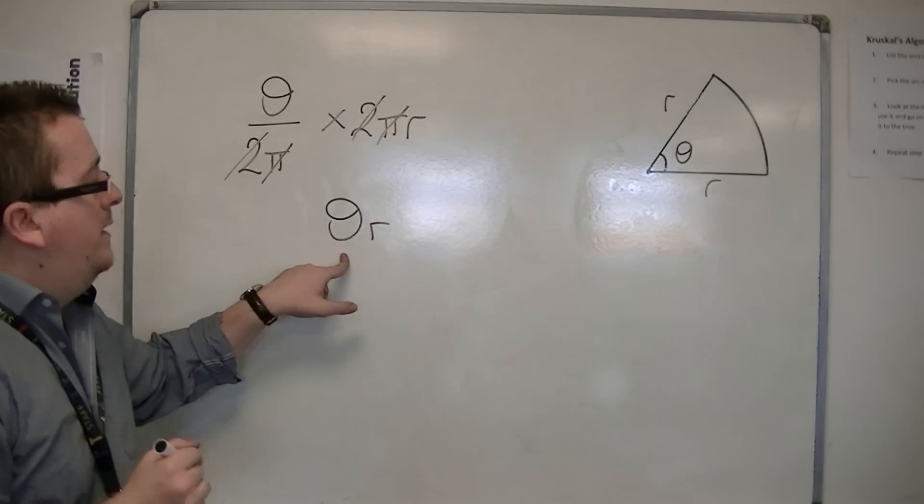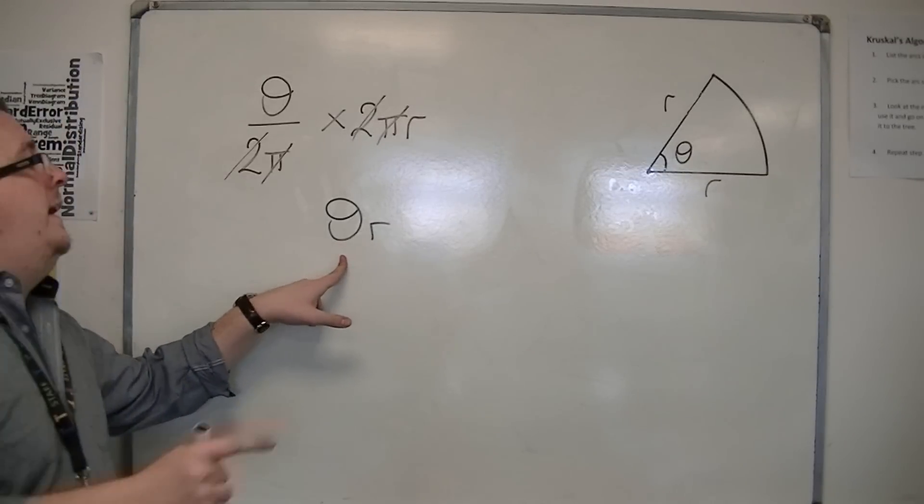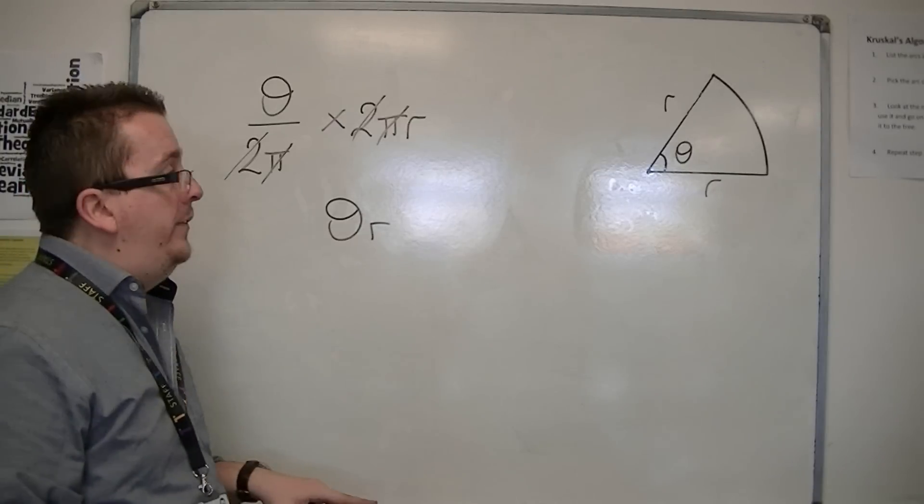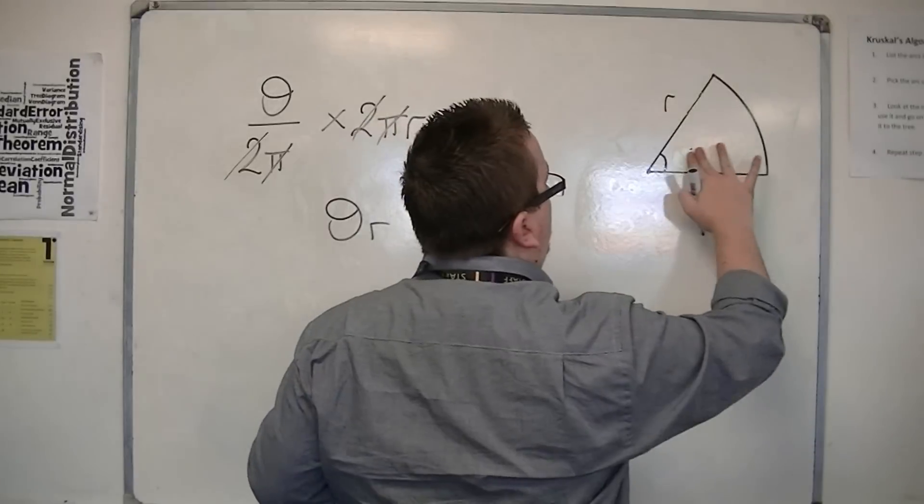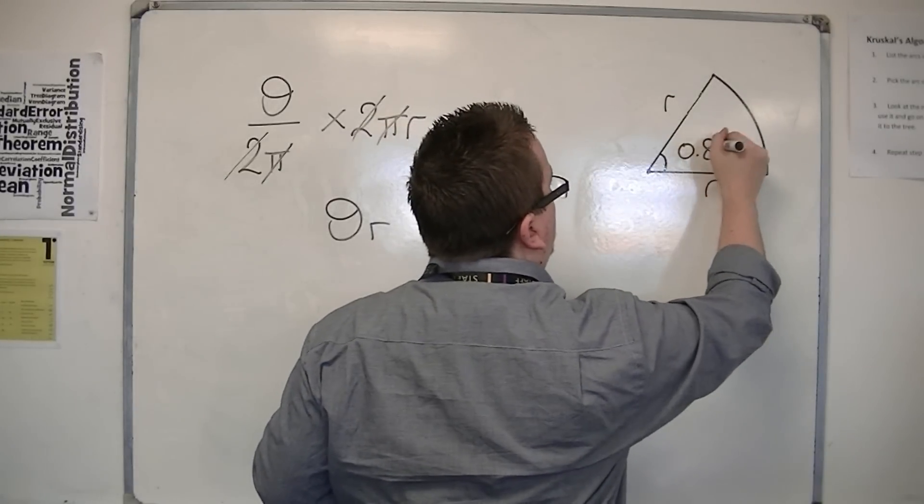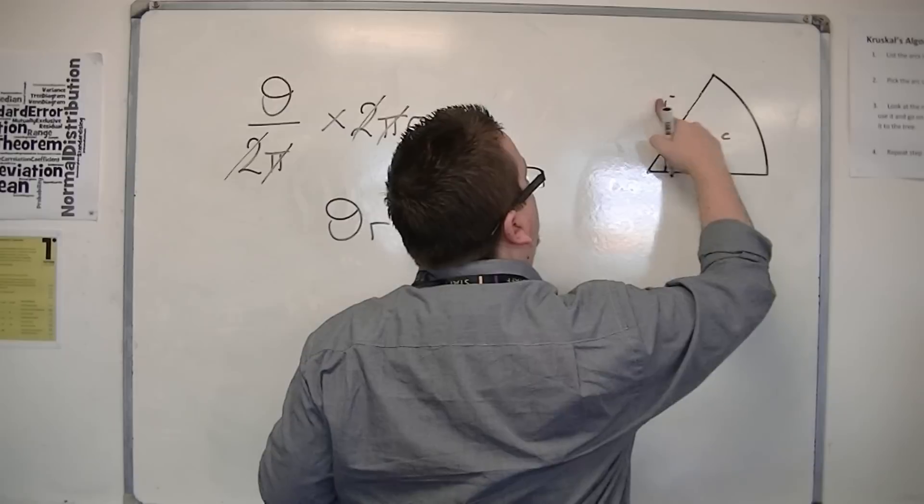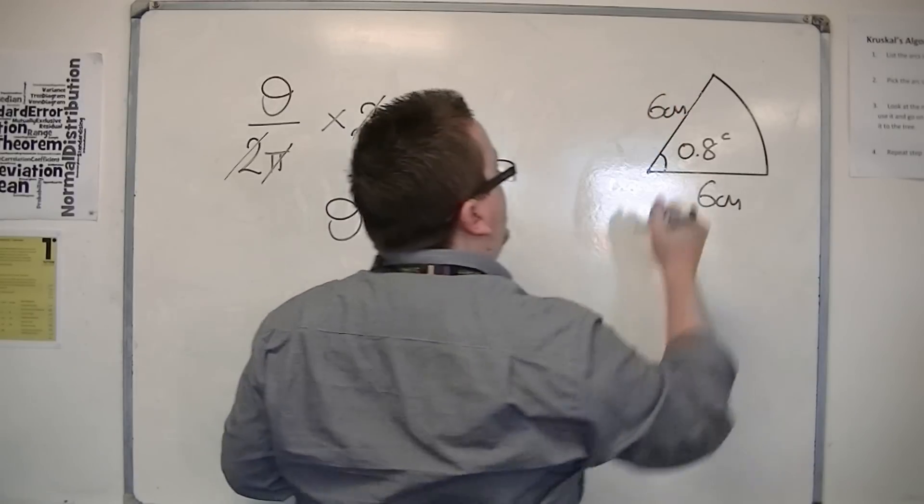So the length of an arc in radians is theta r, and that's all it is. So if I had a theta that was 0.8 radians and 6 centimetres for the radius,